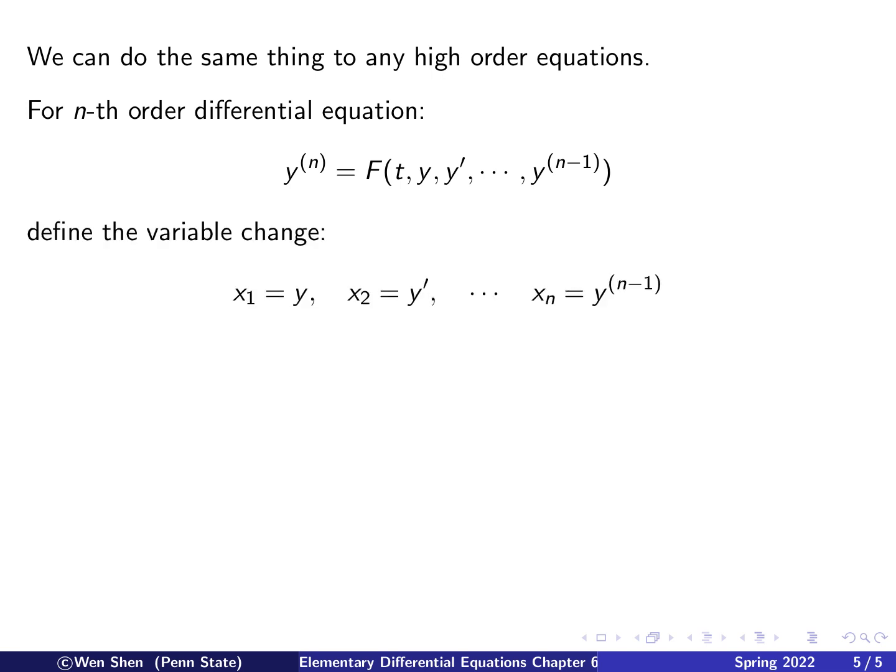So assuming your equation can be written like that. And now we define the variable change in a similar way, but extend it for this general case. So we define x1 to be y, and then x2 is y prime, and then x3 is y double prime, and so on, and xn will be y to the n minus 1 derivative. And now we wish to write out a system of n equations where on the left-hand side of these equations will be the x1 prime, x2 prime, all the way to xn prime, and one for each of these equations.